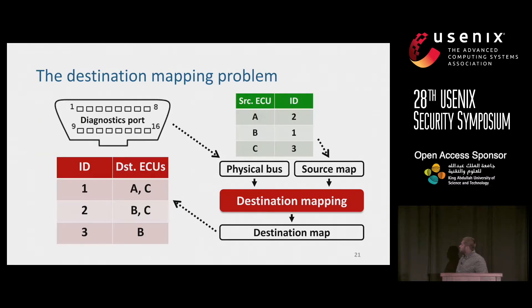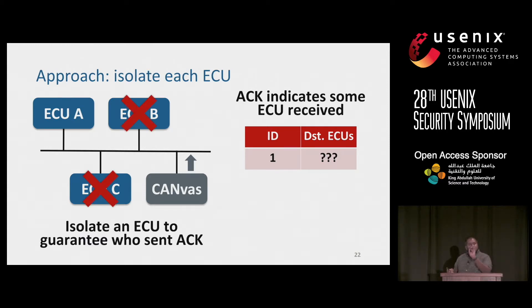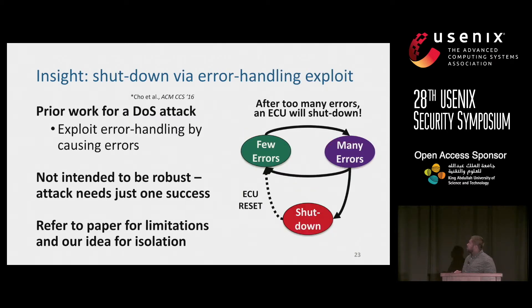Now going to destination mapping. The input for destination mapping is the source map, as well as access to the physical bus through the diagnostics port that all cars in the United States are required to have. The output we want to generate is a destination map — for each ID, the set of destination ECUs receiving that ID. On the unmodified CAN bus, when we transmit a message and see an ACK, we don't know exactly who acknowledged it. But what if we could isolate an ECU to guarantee it is the sole device transmitting that ACK?